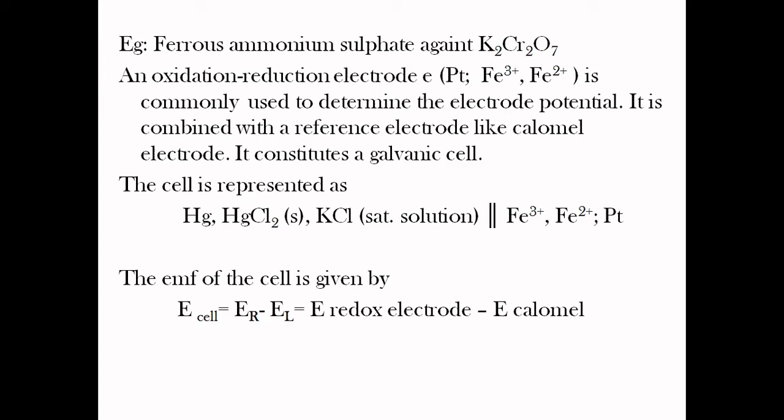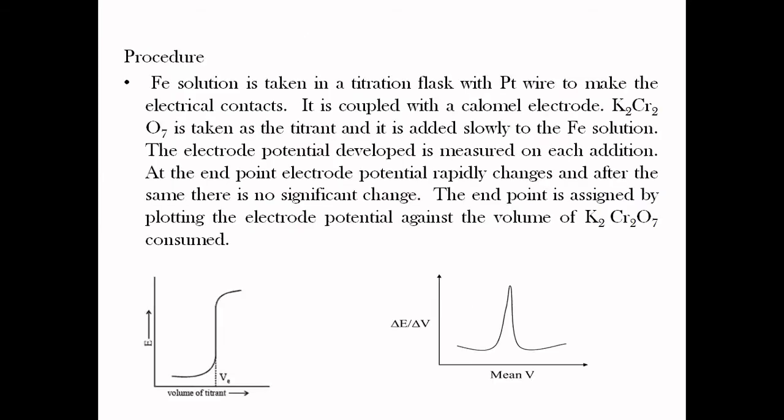The EMF of the cell depends on the concentration of the iron solution. As the concentration of the iron solution changes, the EMF of the cell changes. We plot a graph of EMF against volume of titrant, and based on the graph we can find the volume of the titrant at the endpoint.